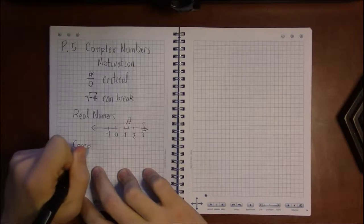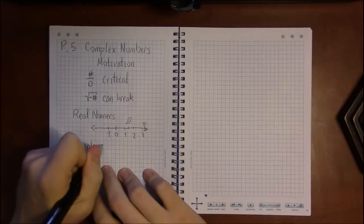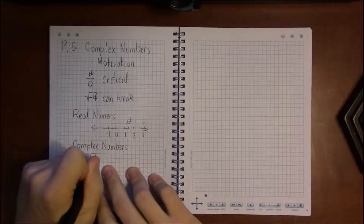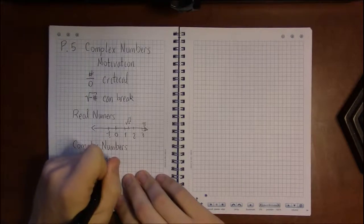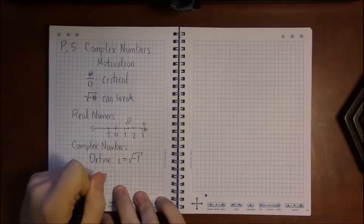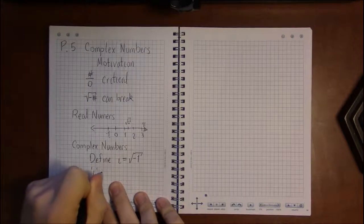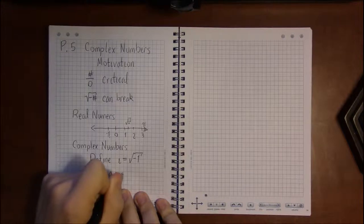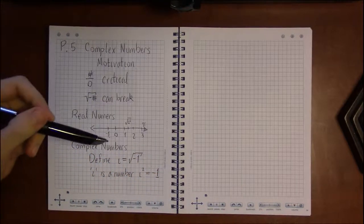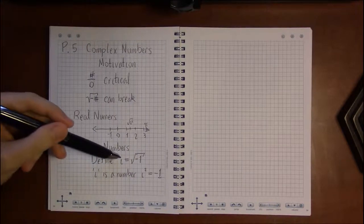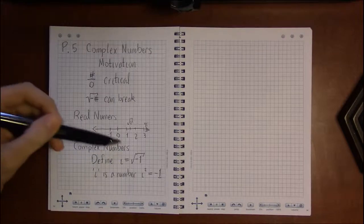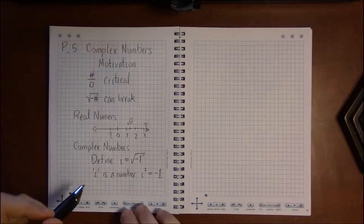Complex numbers start with the idea of taking square roots of negatives, but we'll take it slow. We're going to arbitrarily define i to be the square root of negative one — in other words, i is a number such that i squared equals negative one. Just naming the square root of negative one and calling it a number is enough to take square roots of any negative number.